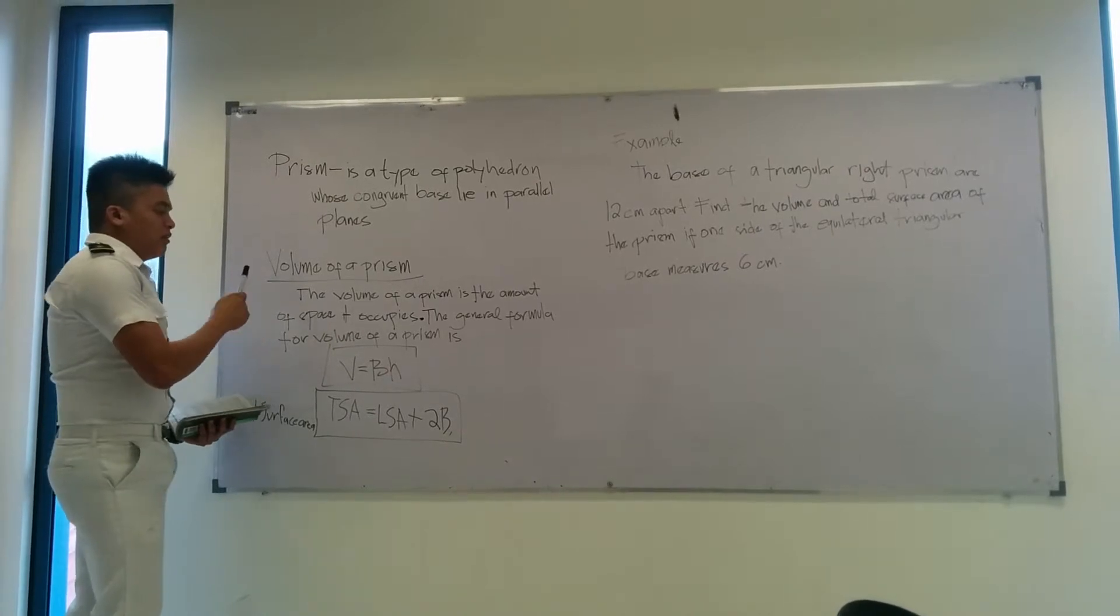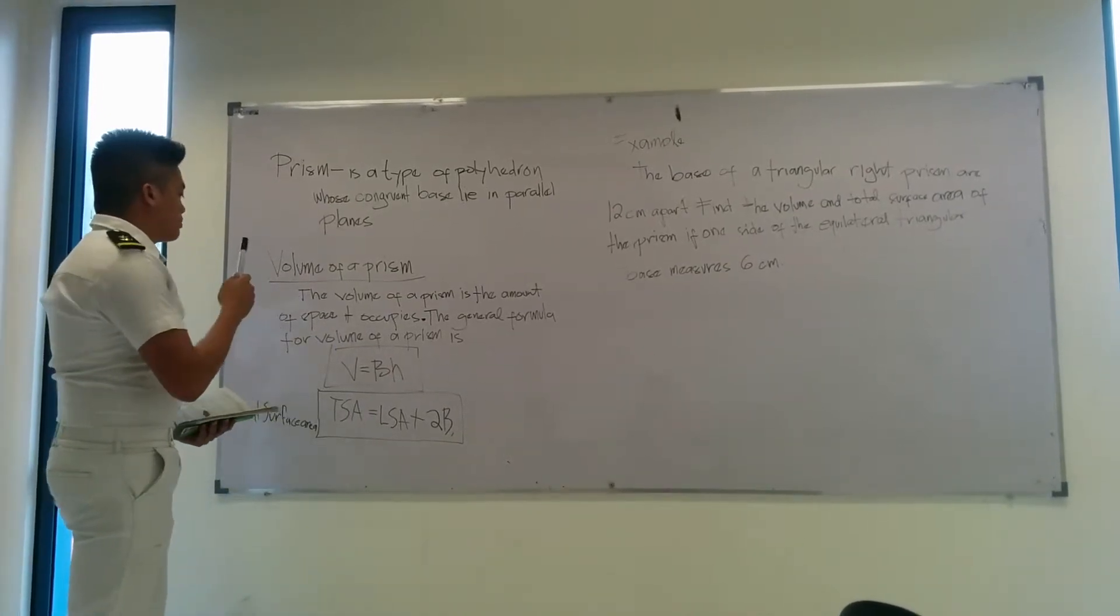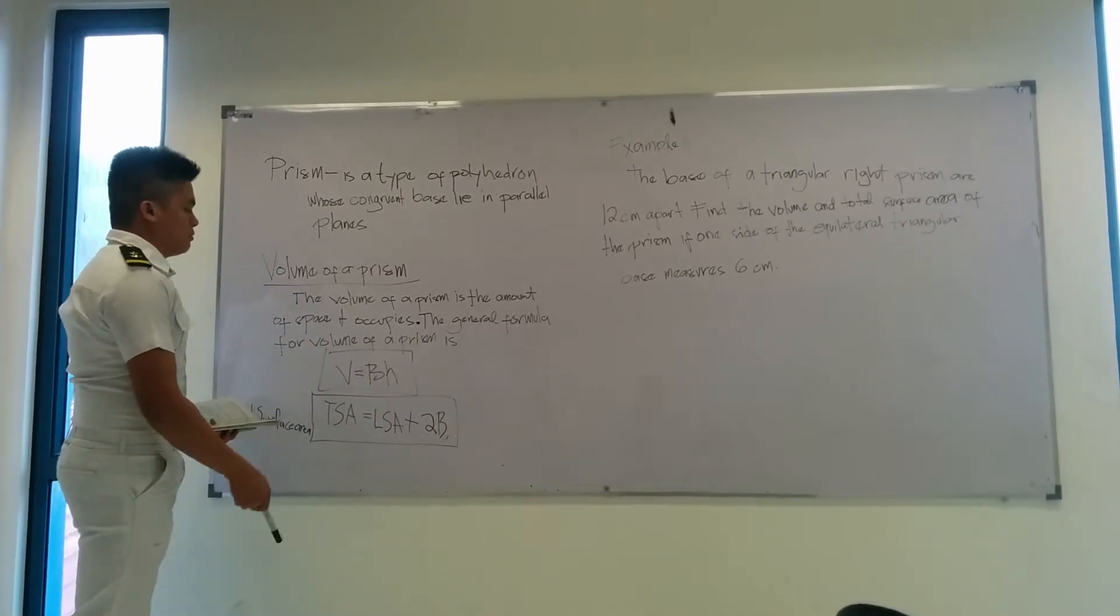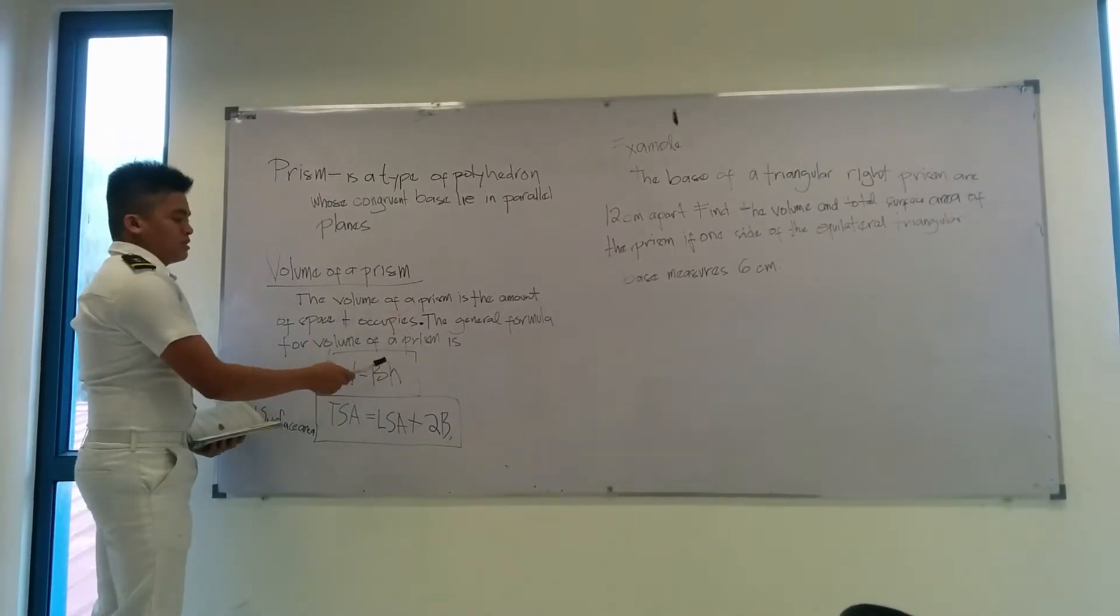The volume of prism. The volume of prism is the amount of space it occupies. The general formula for volume of prism is volume equals base times height.